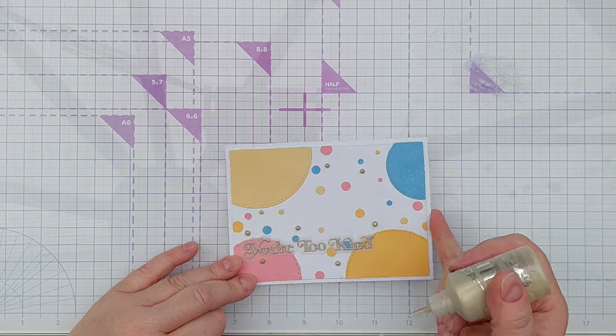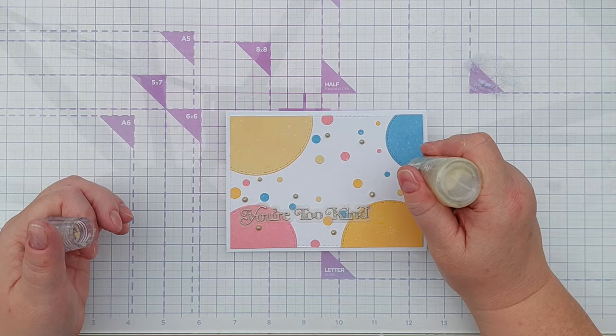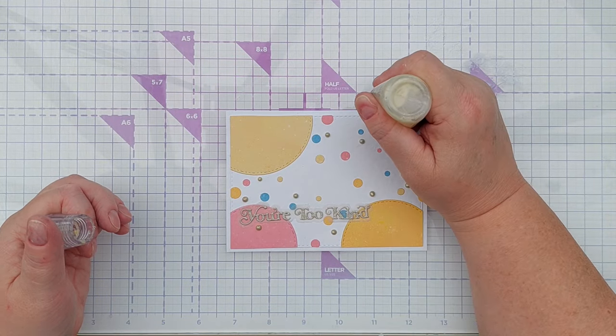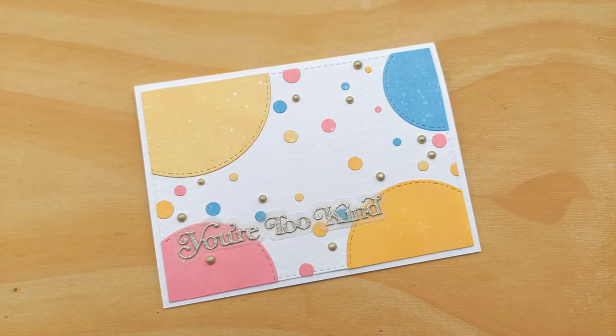If you wanted to keep the card as flat as possible you could omit the nouveau drops. You could even omit the panel and stick your circles directly onto your card blank.